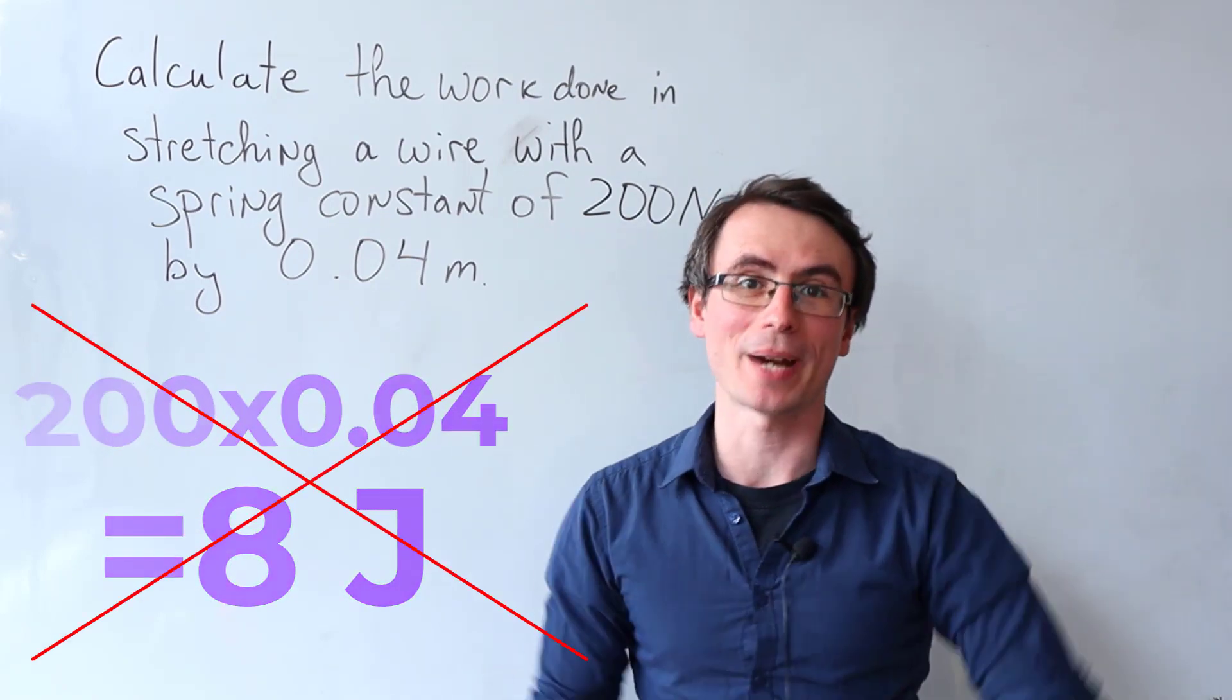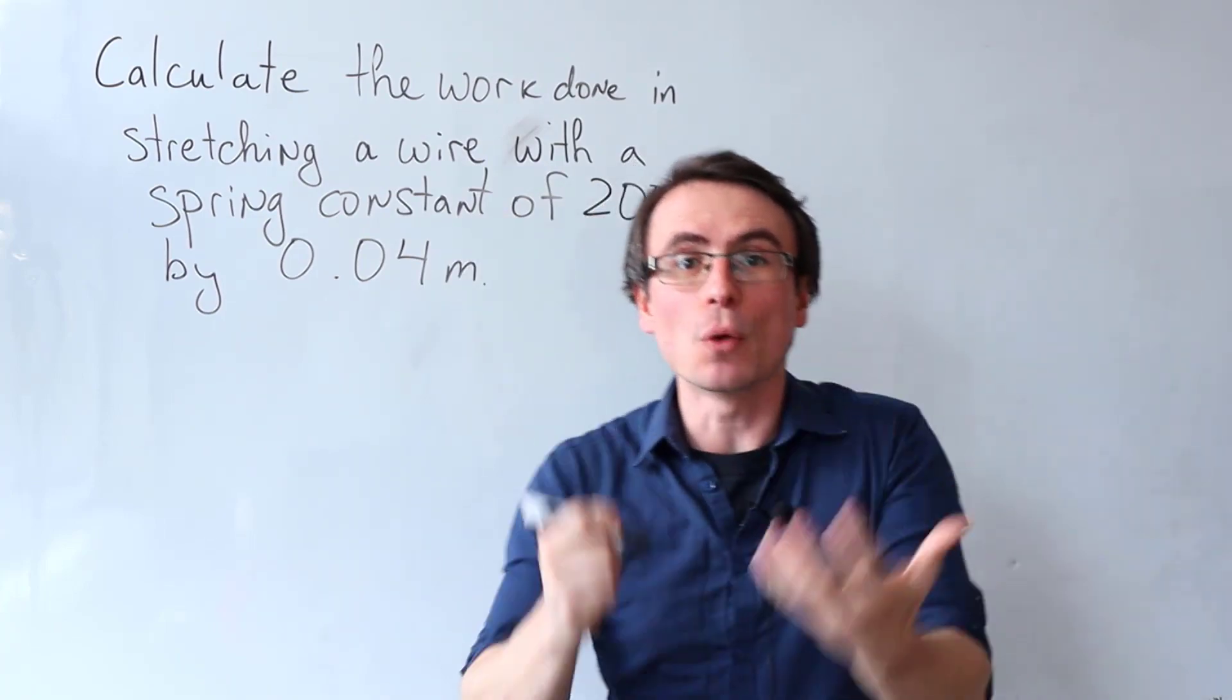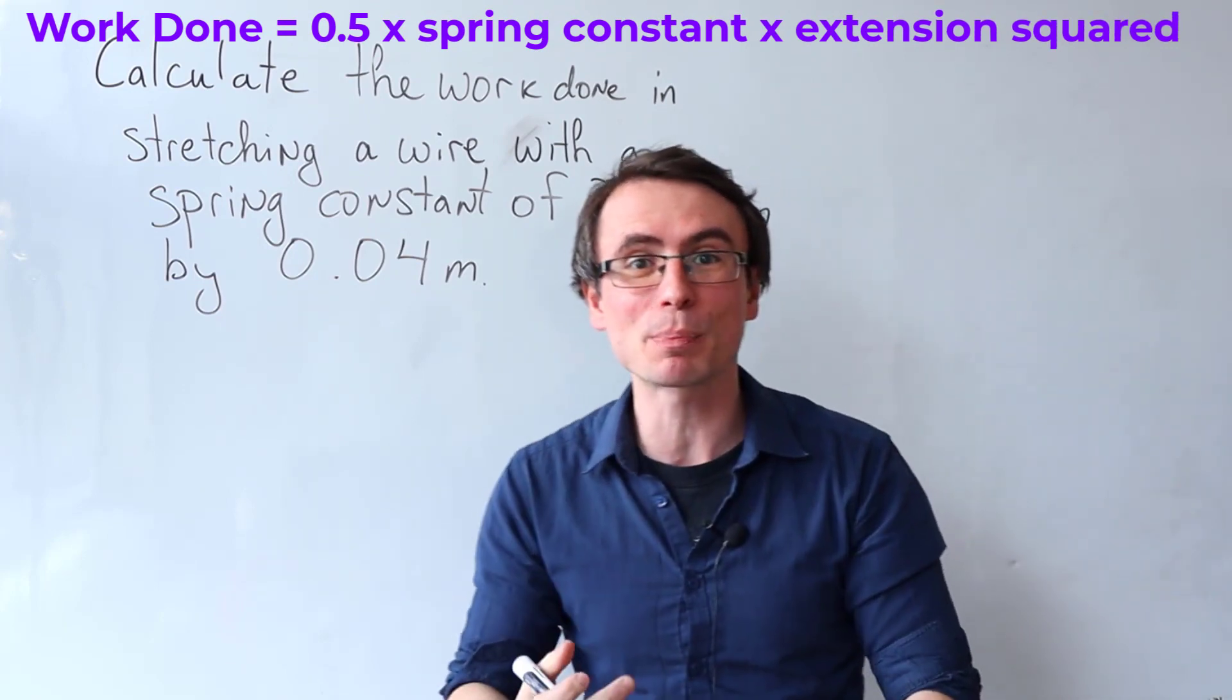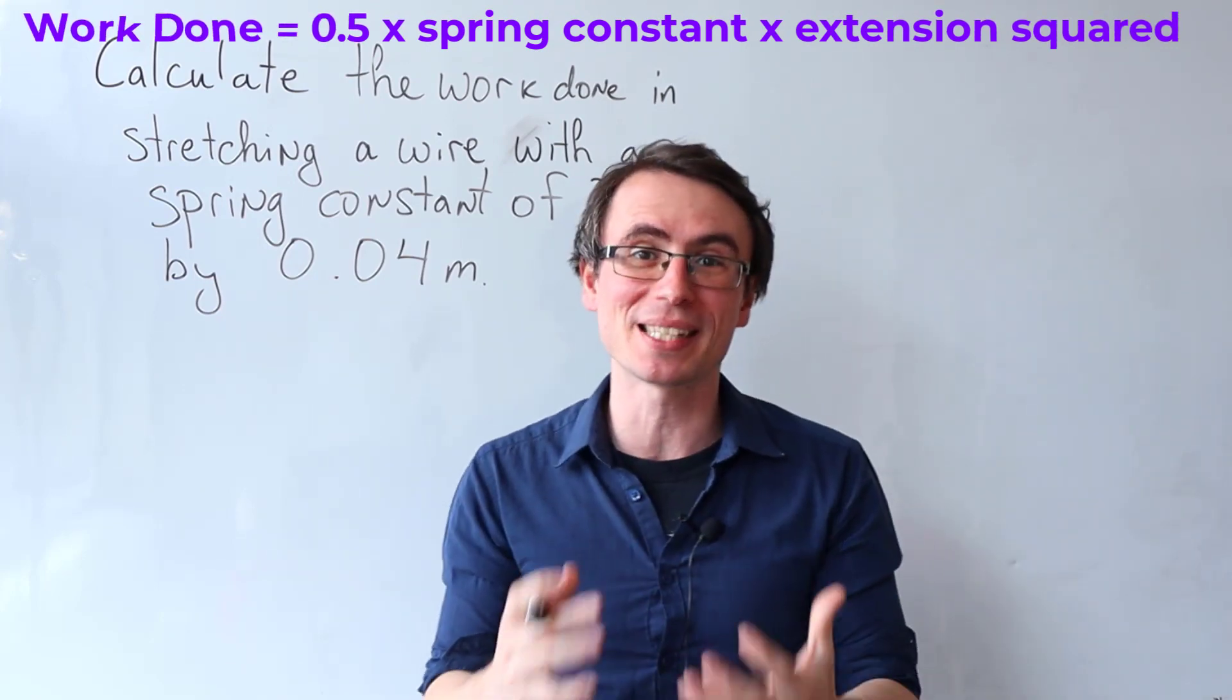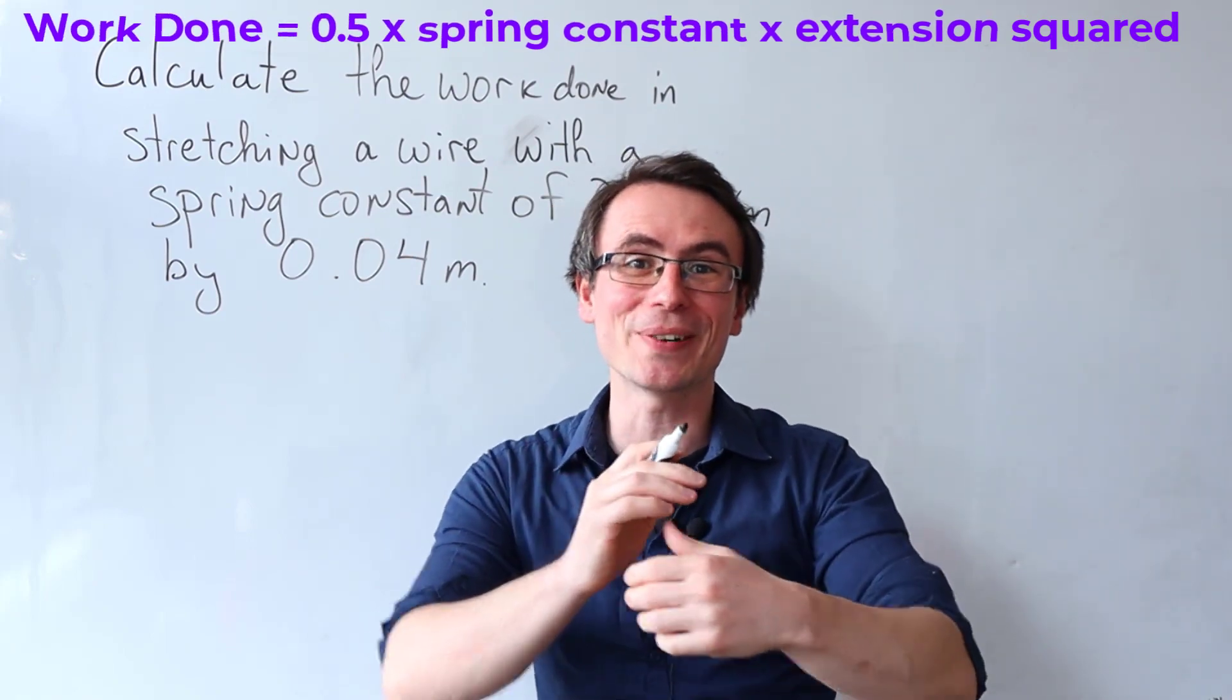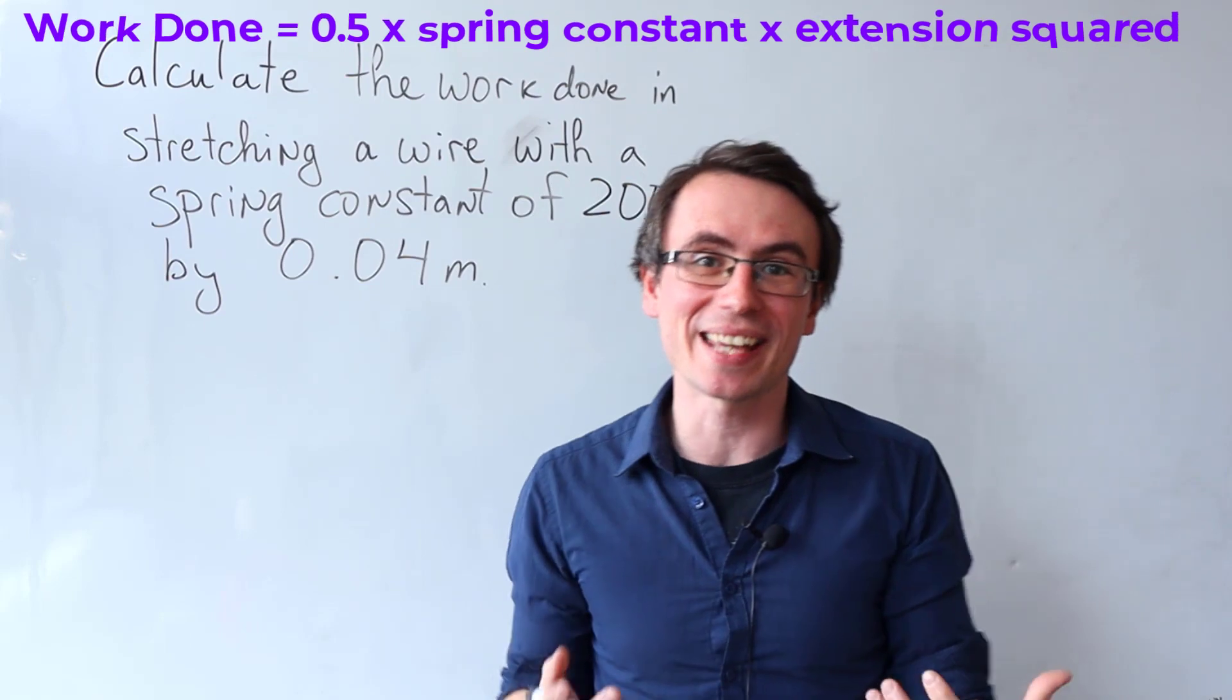This is incorrect. Anytime that an object is stretched elastically, the work done is equal to a half times the spring constant times the extension squared. This is actually equal to the elastic potential energy of the spring, but work done and elastic potential energy in this case are the same.